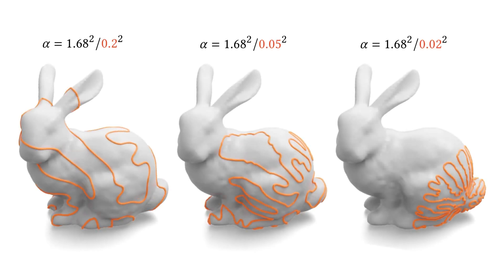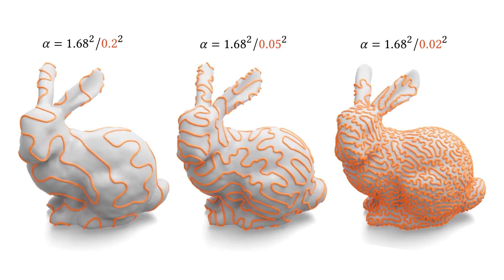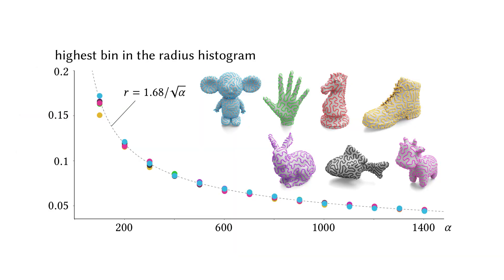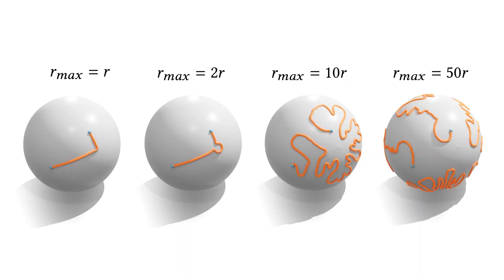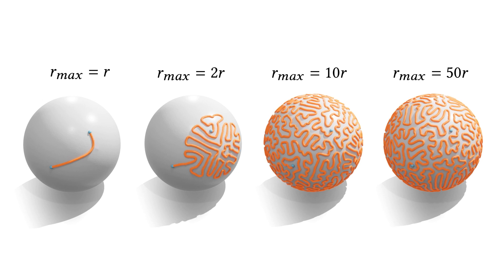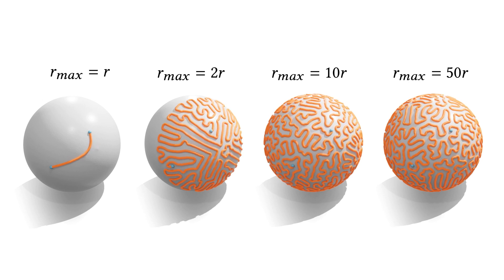We observe that the balancing coefficient alpha serves as a proxy to specify the width of the curve. In practice, we empirically found a correlation between the energy weight alpha and the curve width. Another parameter is the rmax value, which is the clamping value of the medial axis radius. Small rmax values like 2r can reduce pronounced wriggles, at the cost of slower convergence.